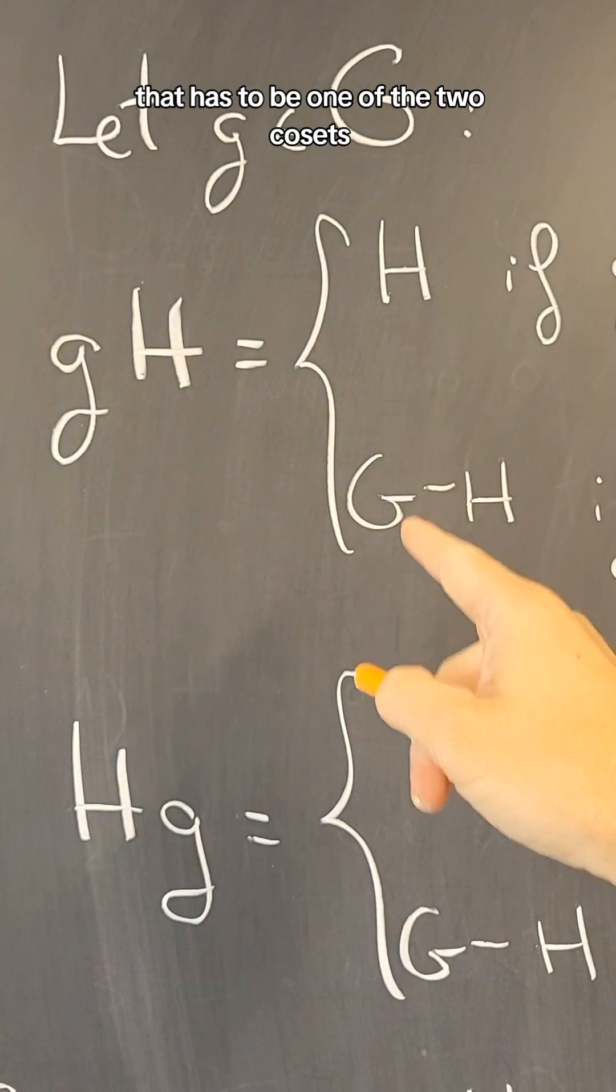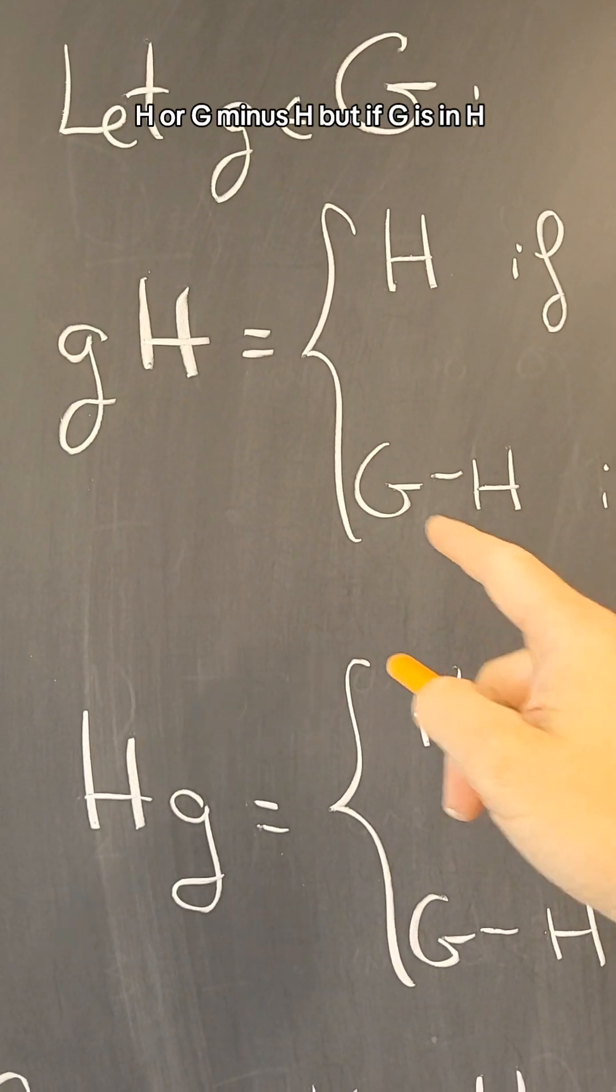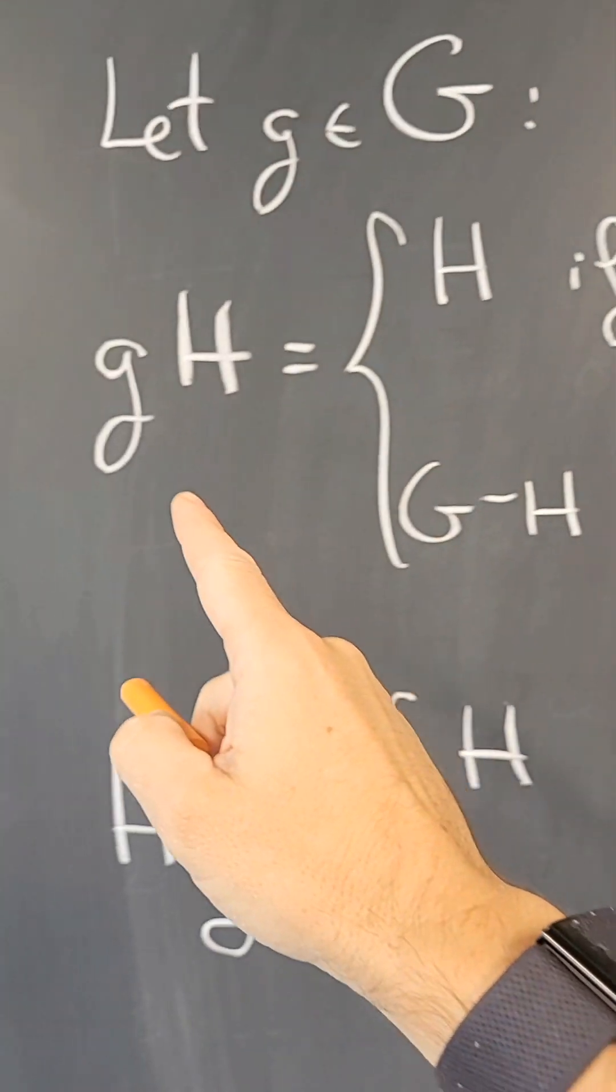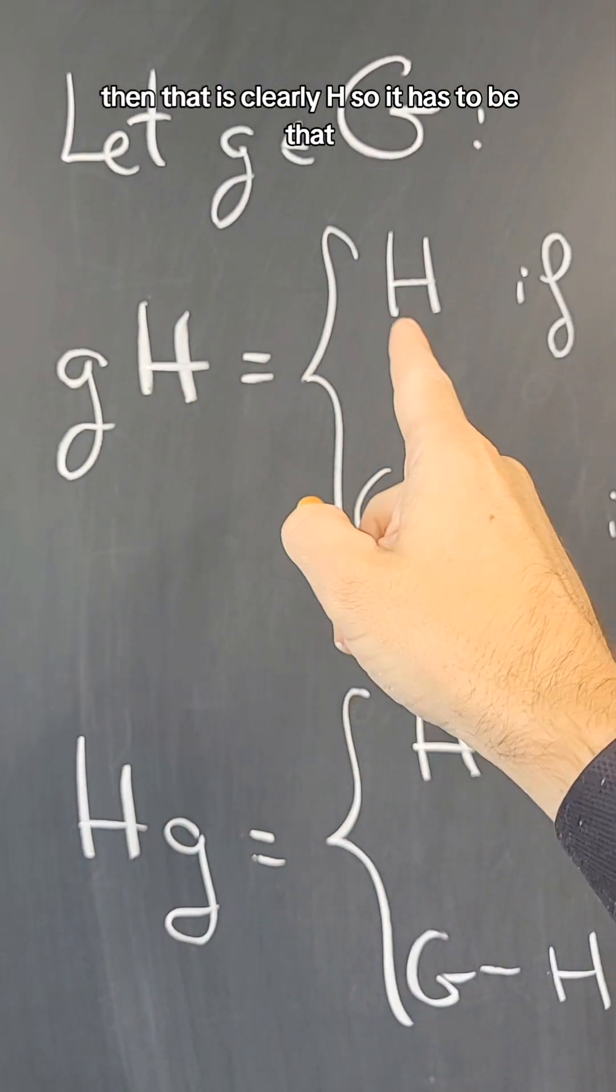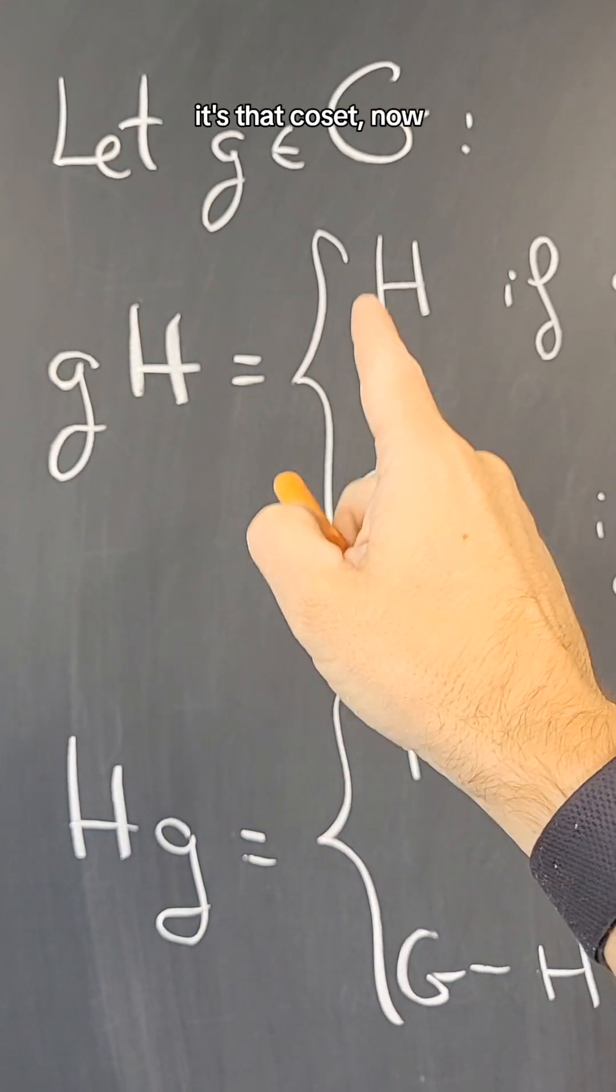That has to be one of the two cosets, H or G minus H. But if g is in H, then that is clearly H. So it has to be that it's that coset.